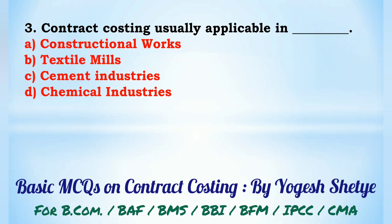Question 3: Contract costing is usually applicable in — (A) constructional work, (B) cement industries, (C) chemical industries, or (D) estimates. Contract costing is usually applicable in constructional work. Answer: A.